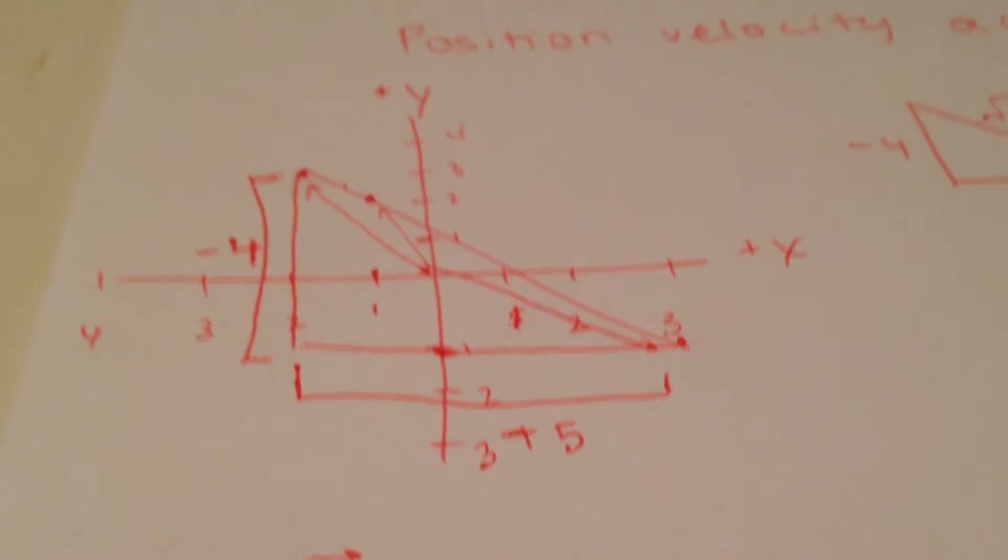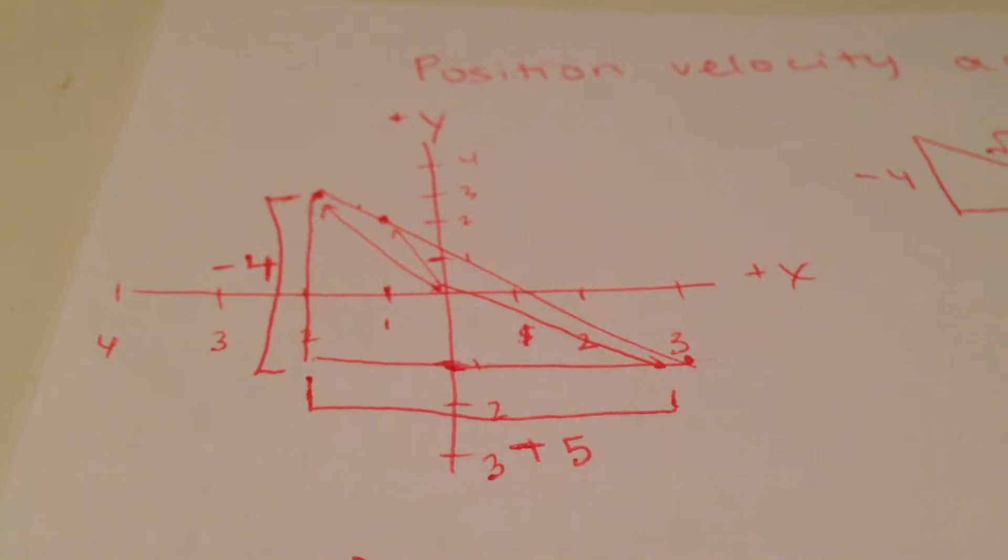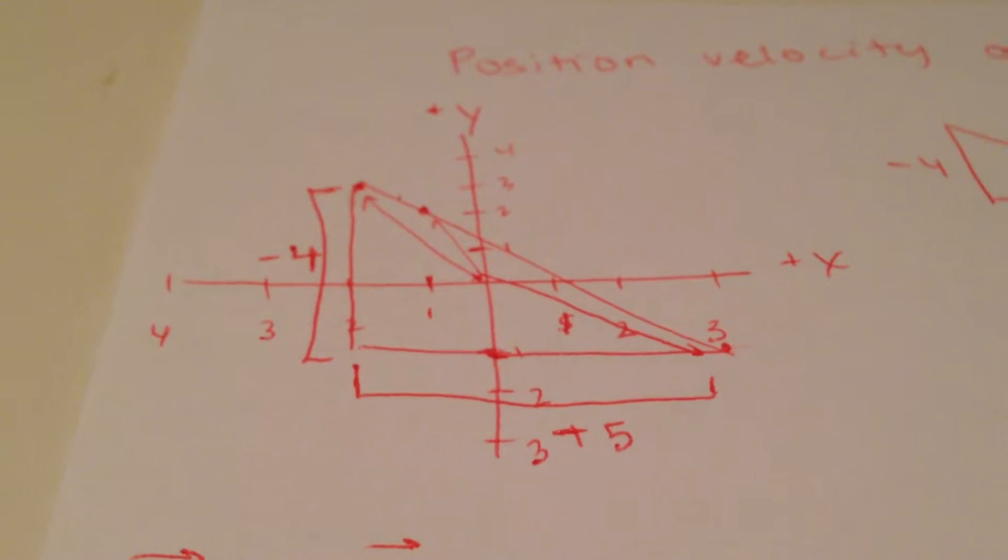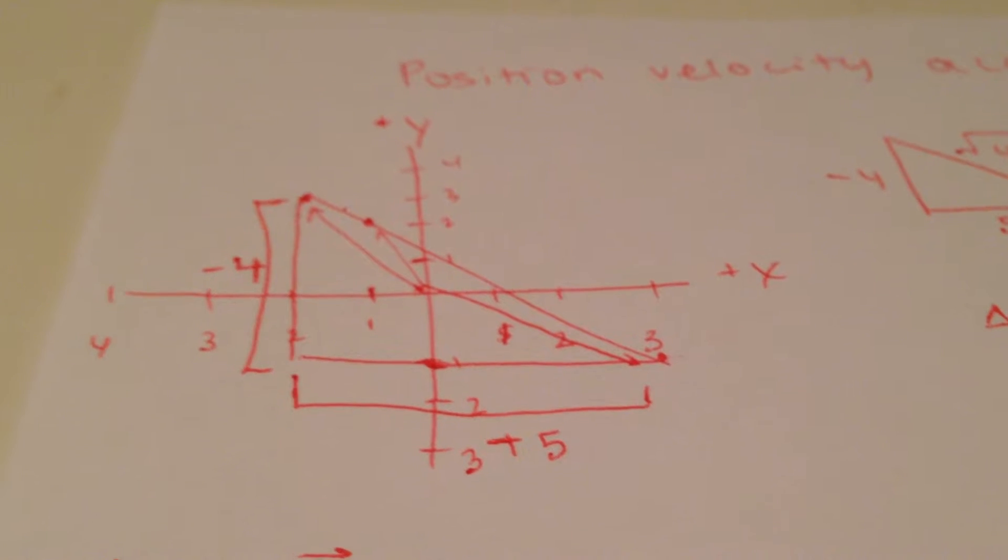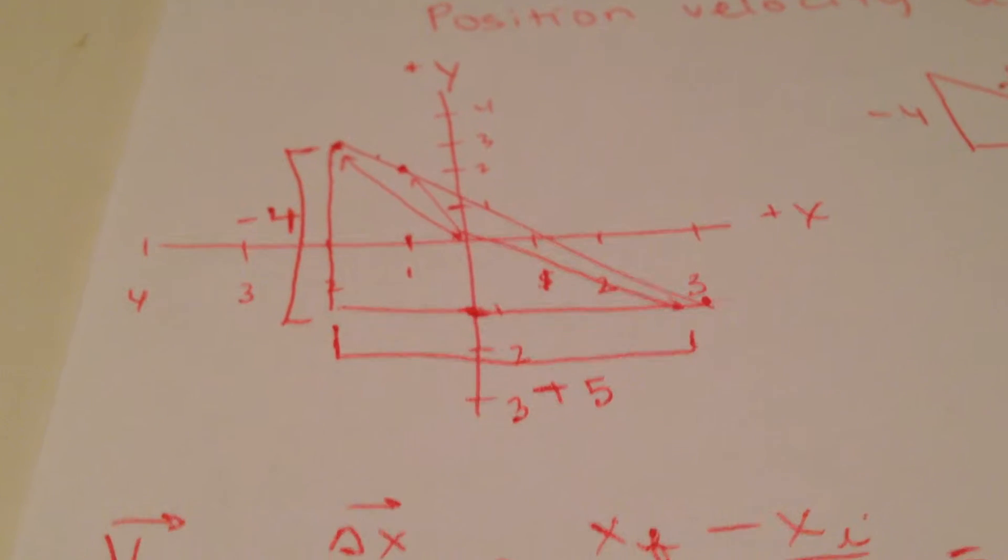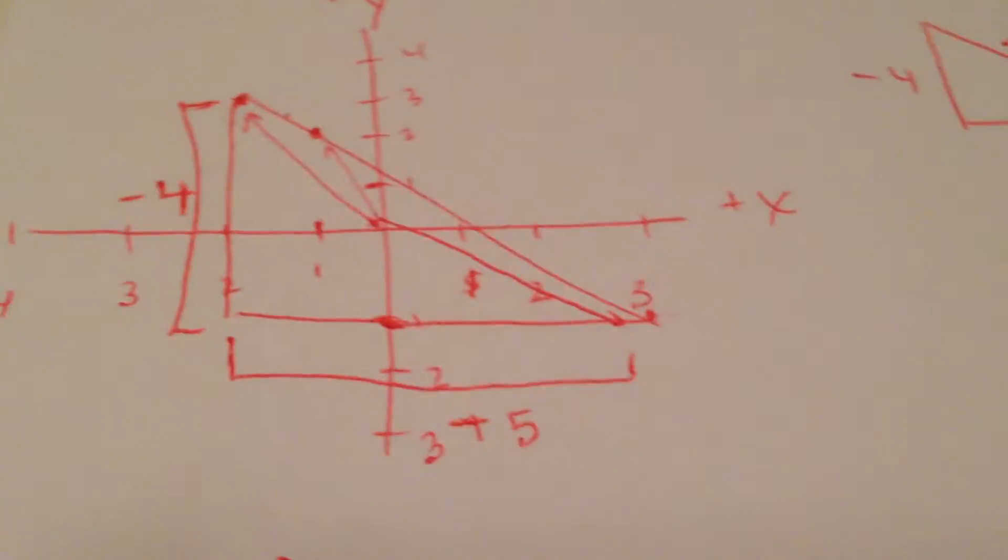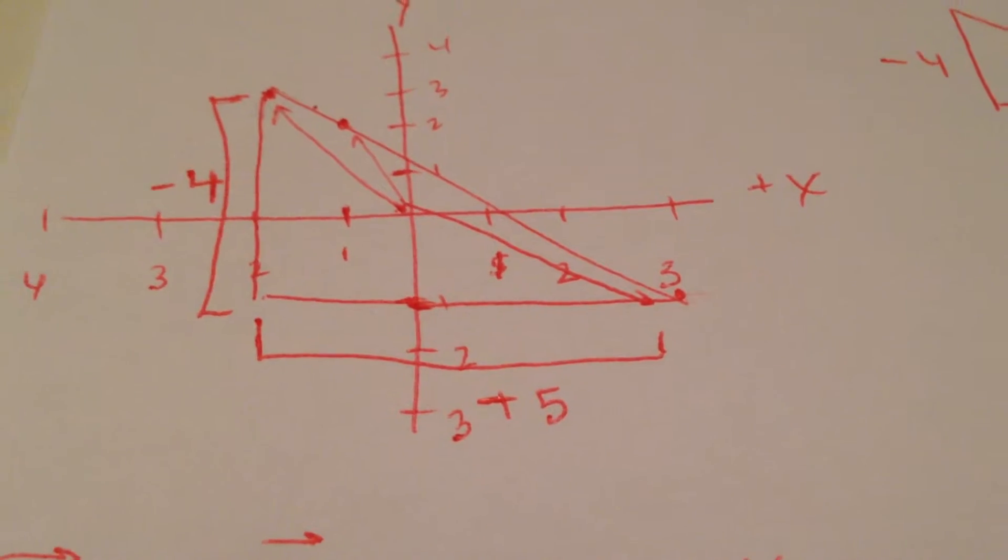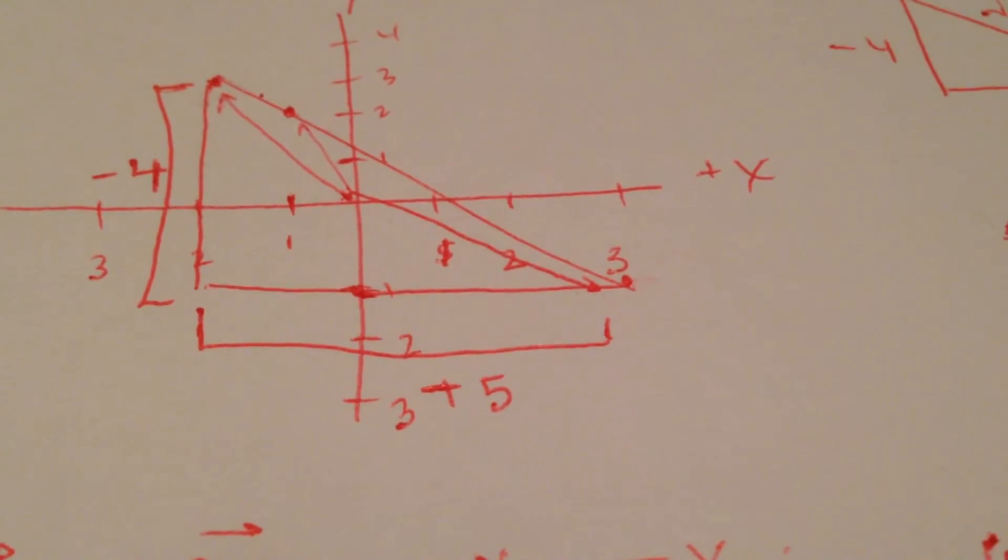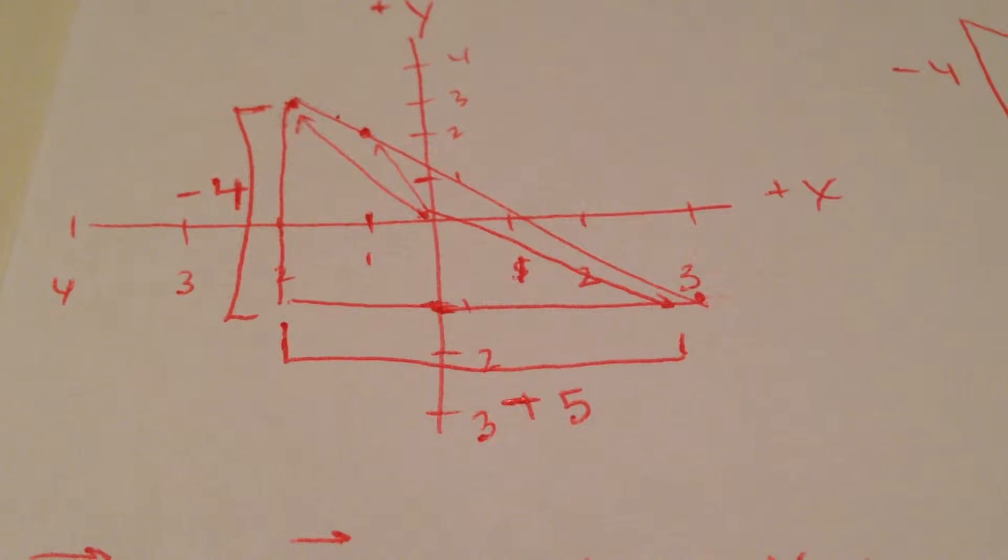Right now in this graph we're talking about displacement position so the units are going to be meters. First you start out at negative 2, 3 and then you go to the second point at negative 1, 2 and then you move to your third point at 3, negative 1.